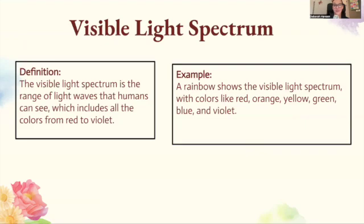The visible light spectrum is the range of light waves that humans can see, which includes all the colors from red to violet. A rainbow shows the visible light spectrum with colors like red, orange, yellow, green, blue, and violet — and if you remember from your old science classes, that would be Roy G. Biv.